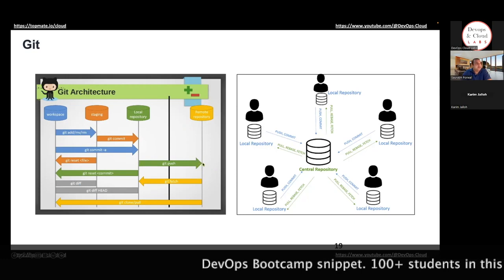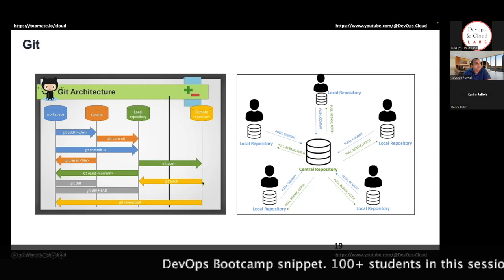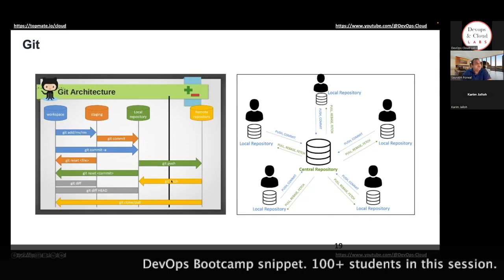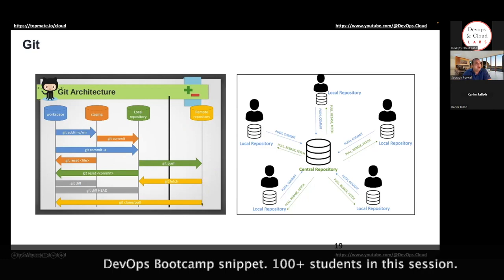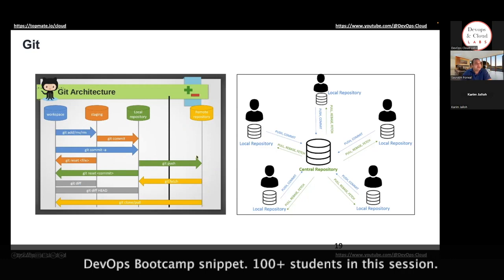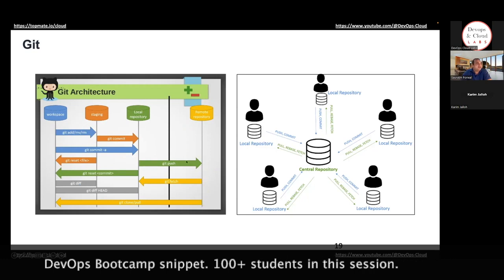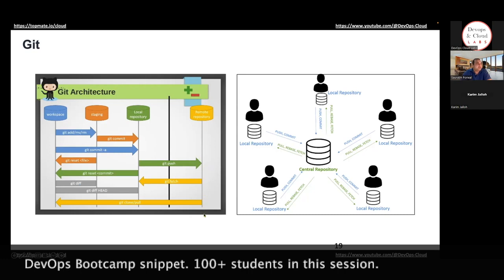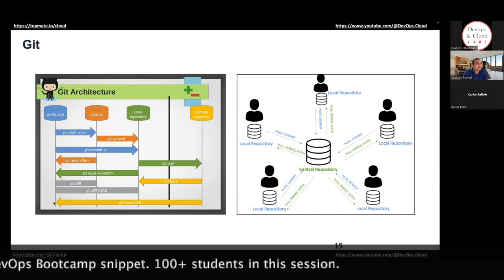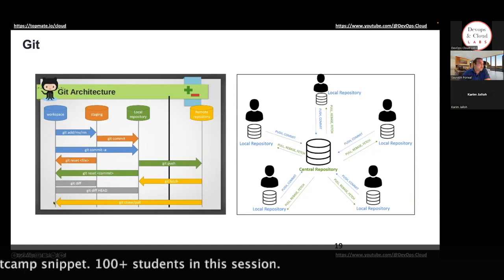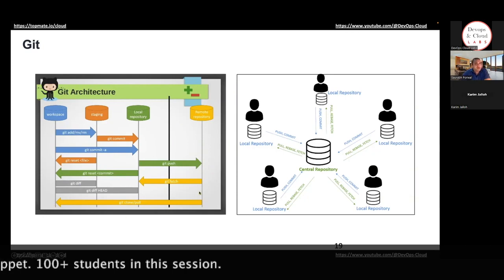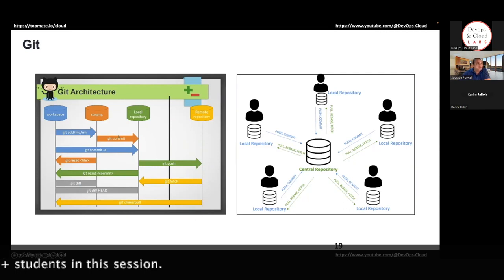Now, all the other developers — what they're doing is they're doing a git fetch or they're doing a git pull. That is the time when the first developer's changes are reflected back onto the workspace. I'll give you time for questions, but we'll look at all these commands in detail as well.